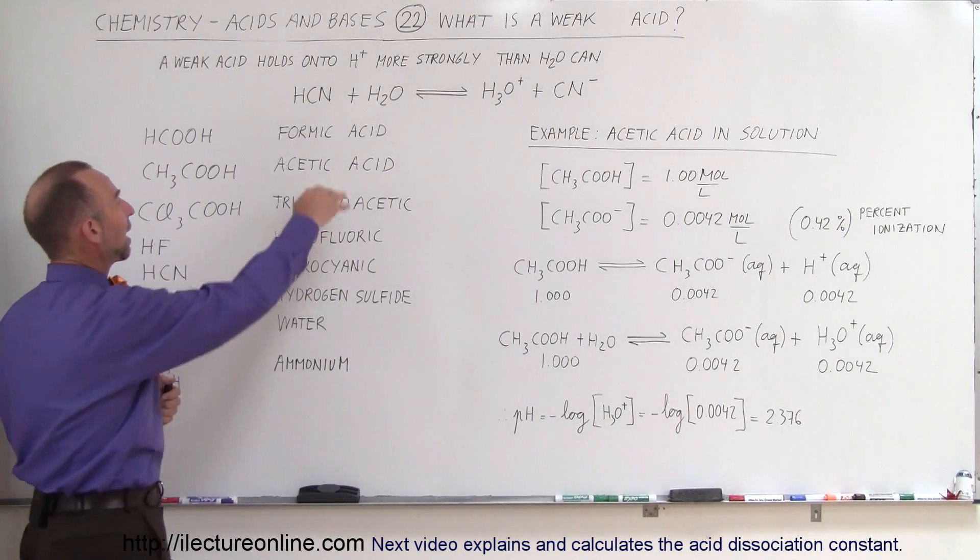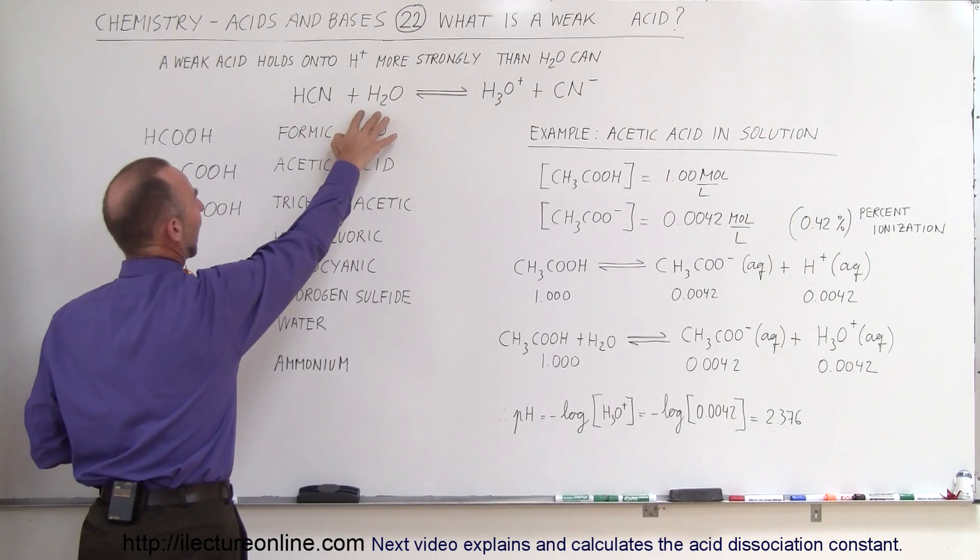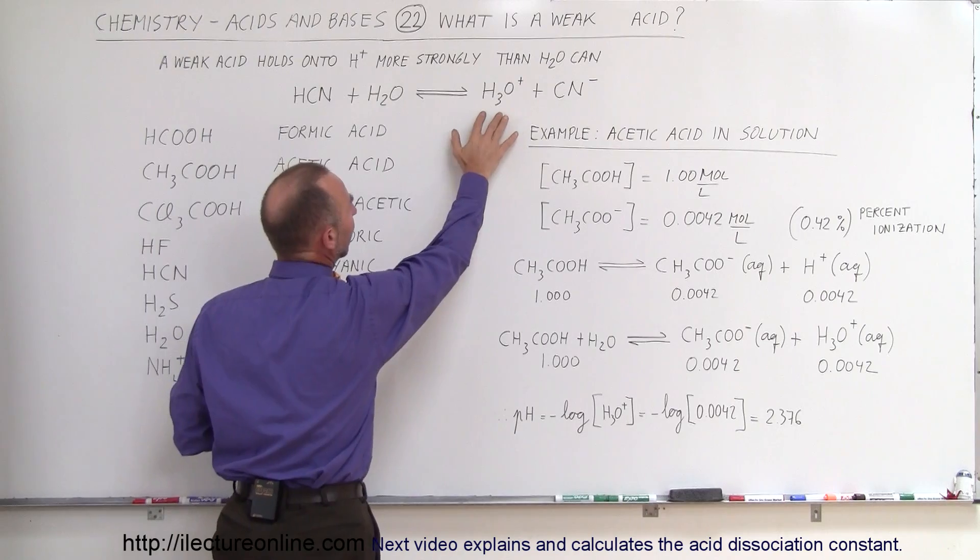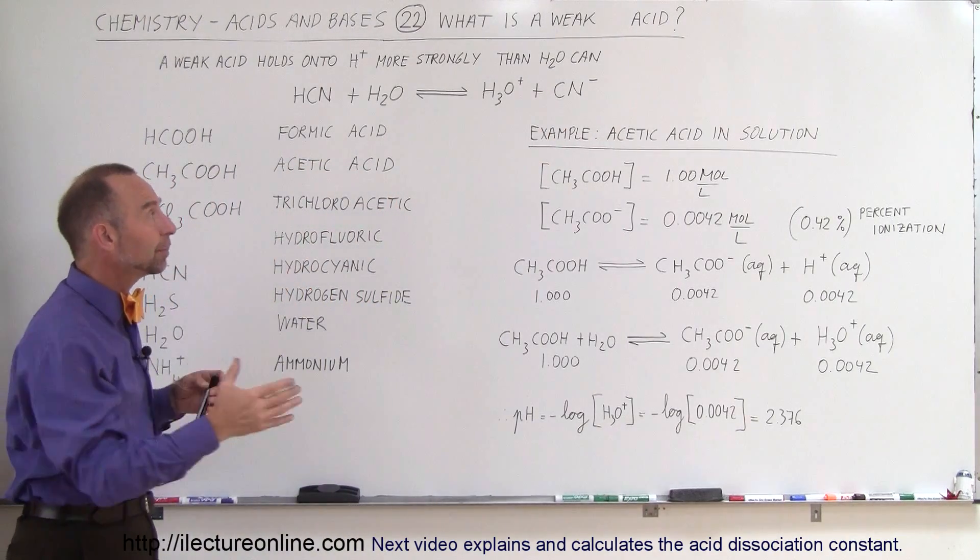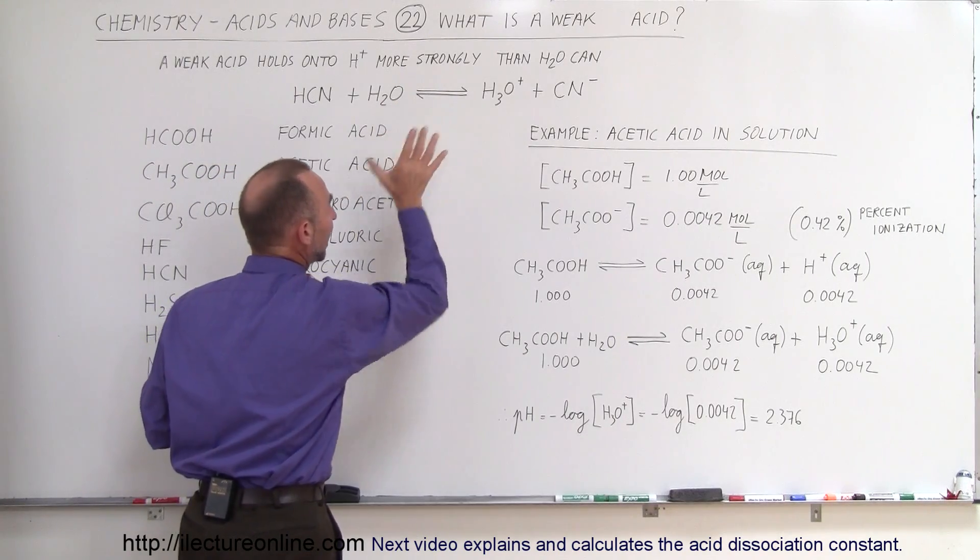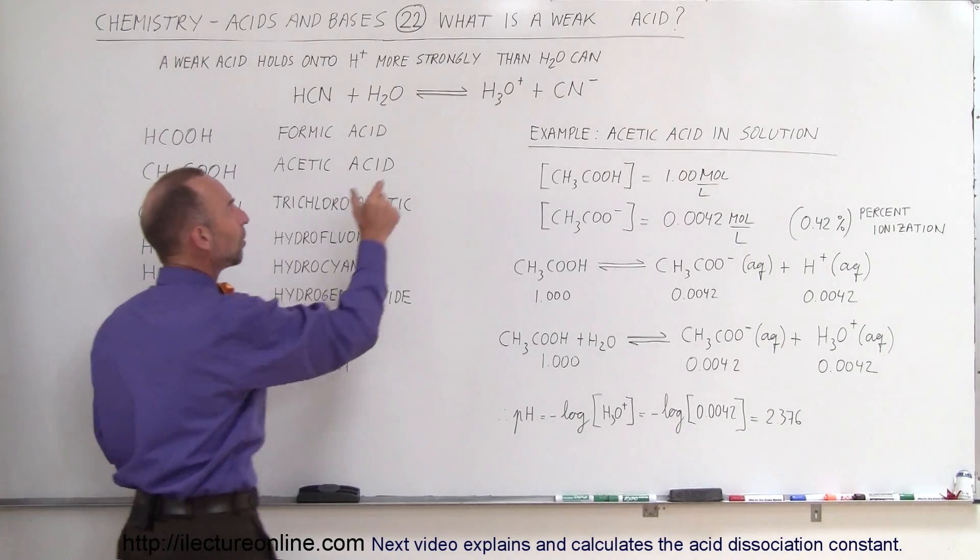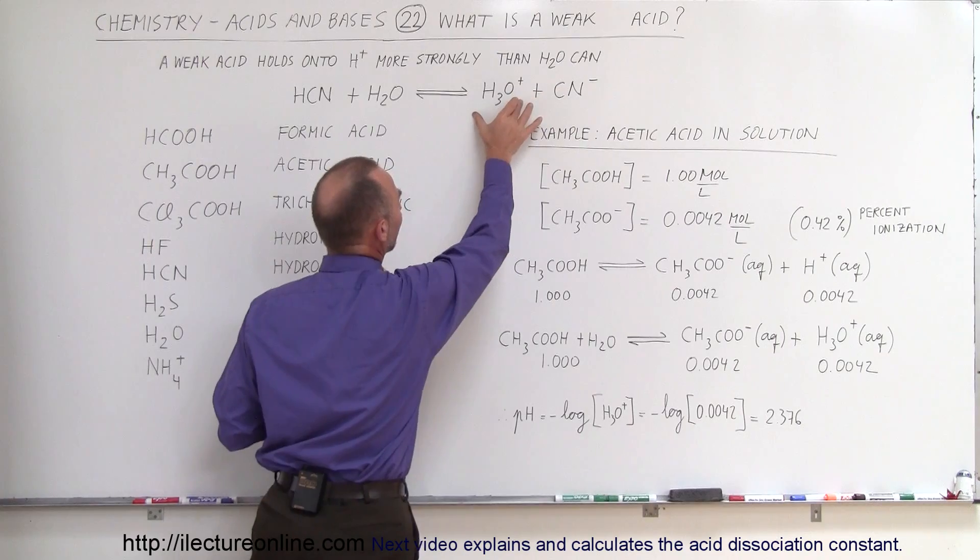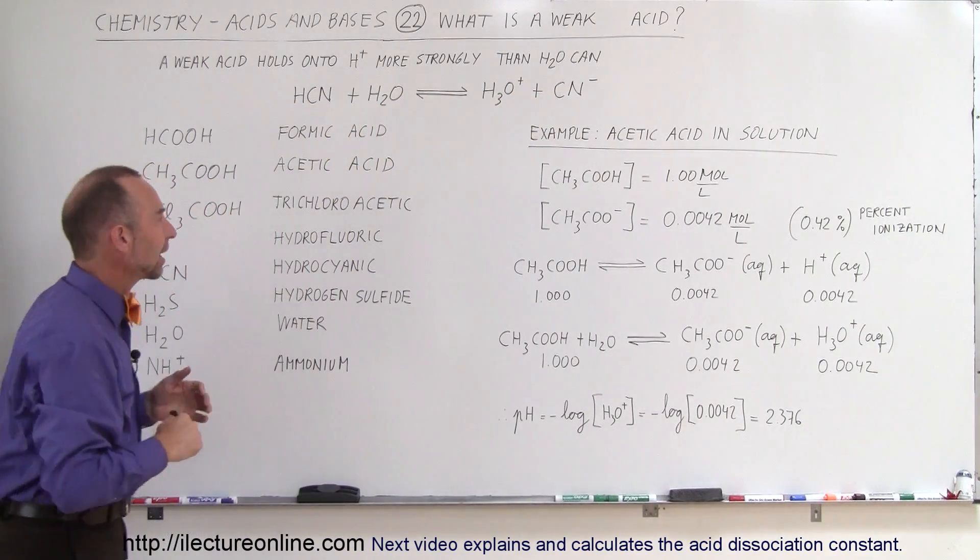As an example, we have hydrocyanic acid added to water, and we end up with a hydronium ion and the cyanide ion, but only to a certain percentage, not completely. So you see that the reaction goes back and forth and it will stabilize at some point where there's some equilibrium reached. Only a small percentage of the molecules will have turned into cyanide ions and hydronium ions, and the majority will stay as hydrocyanic acid.